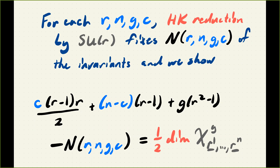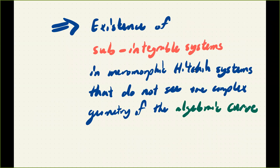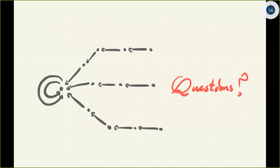What's interesting is that this integrable system embeds into the Hitchin system as a sub-integrable system, but it does not see the complex geometry of the algebraic curve—it's a purely representation-theoretic construction. You get a variety of these for different combinations of c, different combinations of complete and minimal flags, giving a hierarchy of sub-integrable systems within the Hitchin system. We've also investigated these hyperpolygons from other points of view such as mirror symmetry and construction of triple branes, taking advantage of the hyperkähler structure. But for the purposes of this talk I really just wanted to tell you about this integrable system structure and how it relates to the Hitchin system. And that's everything.